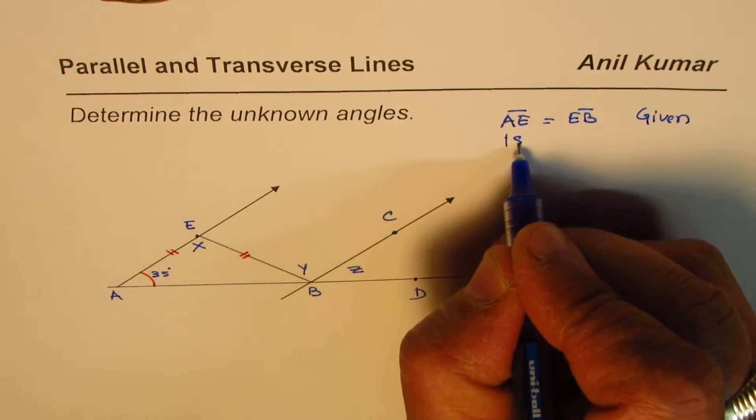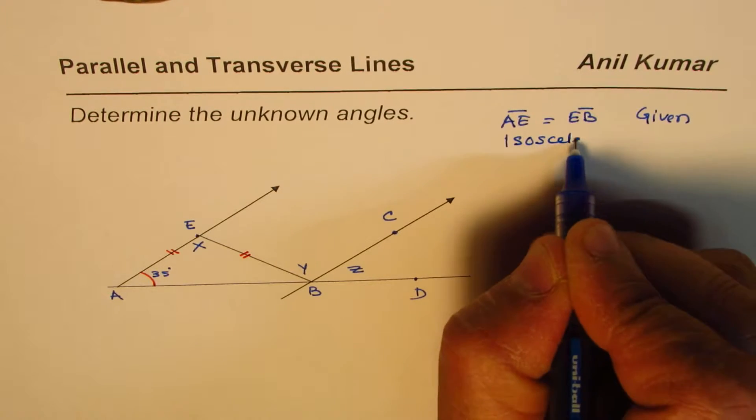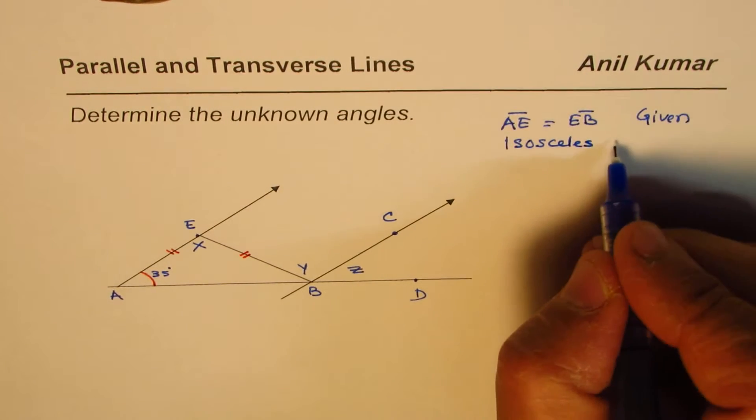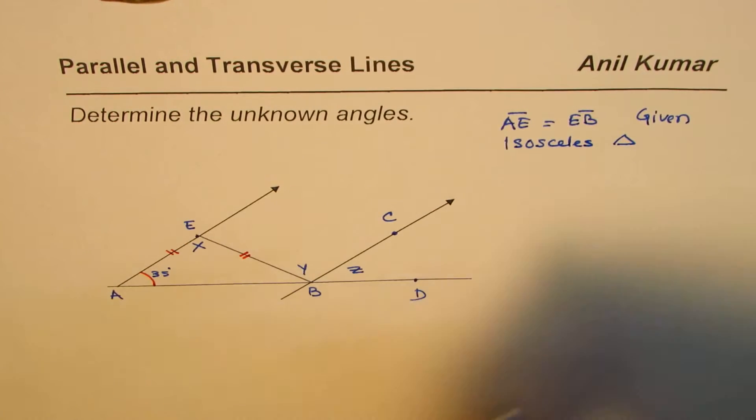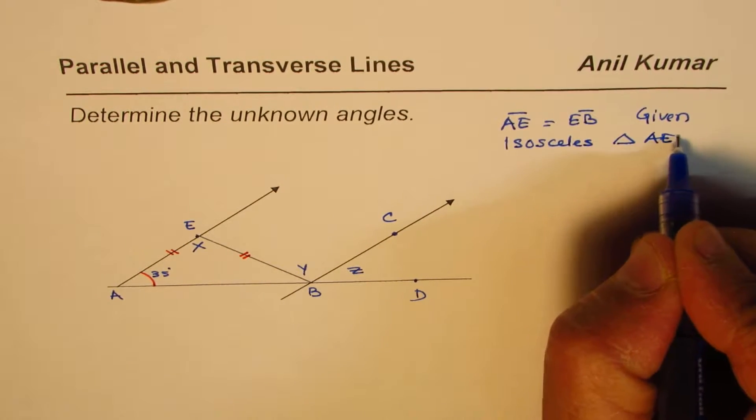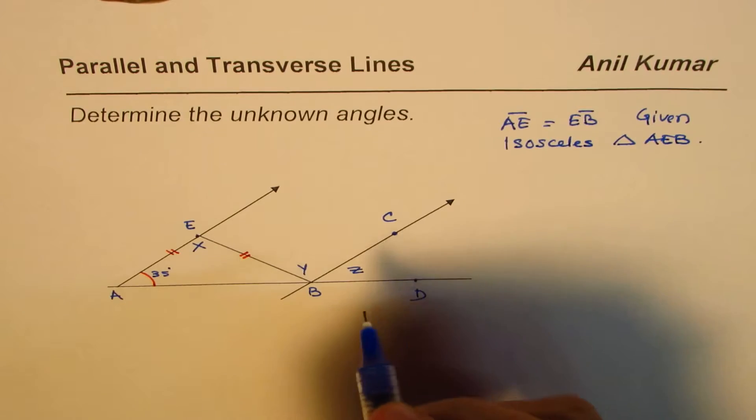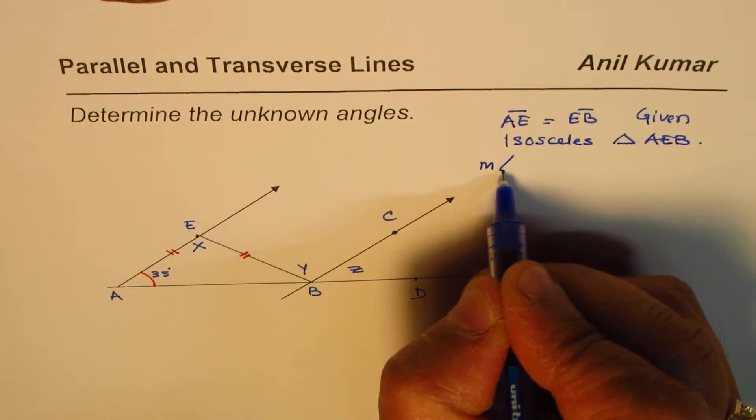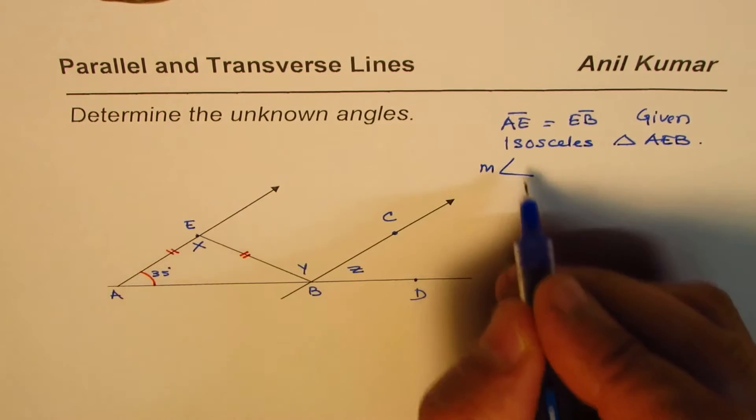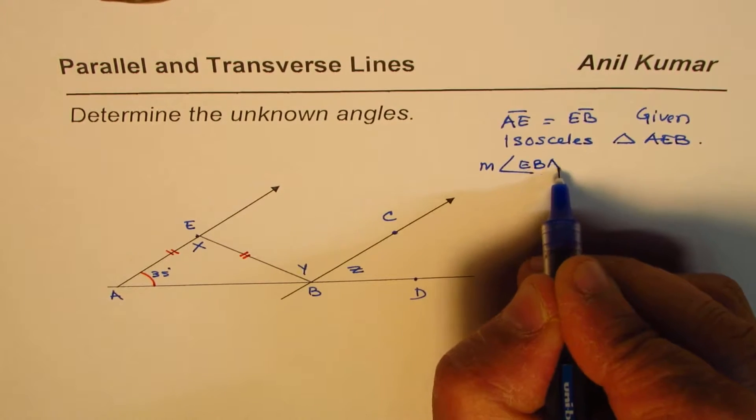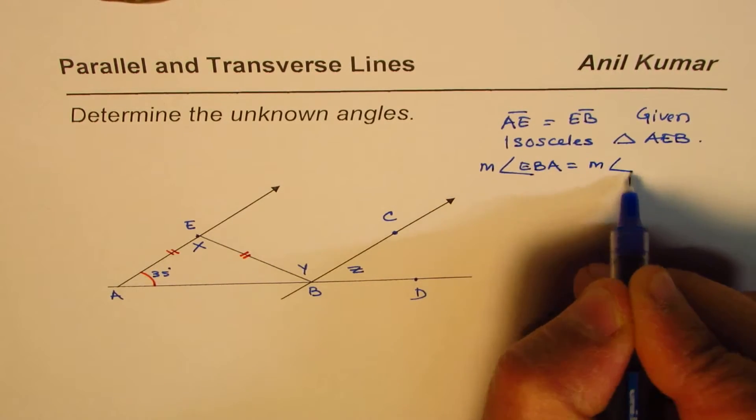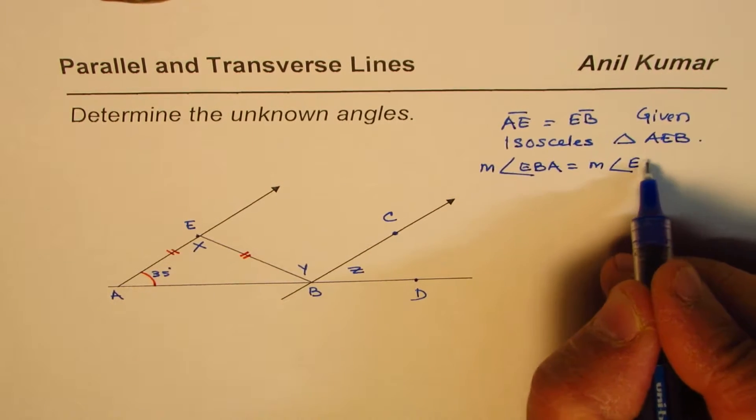That means we have isosceles triangle AEB. And that means the measurement of angle EBA equals to measurement of angle EAB.